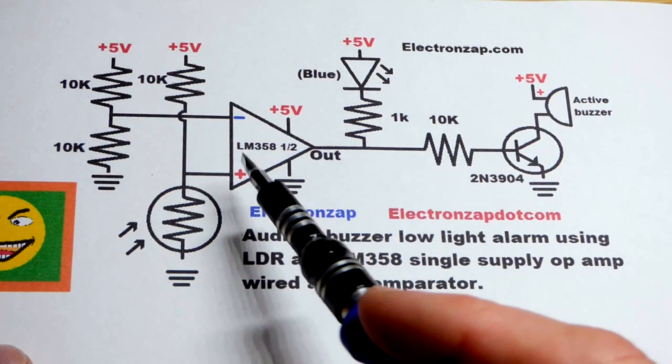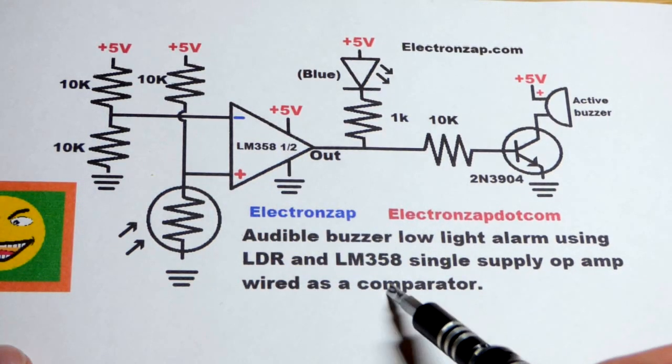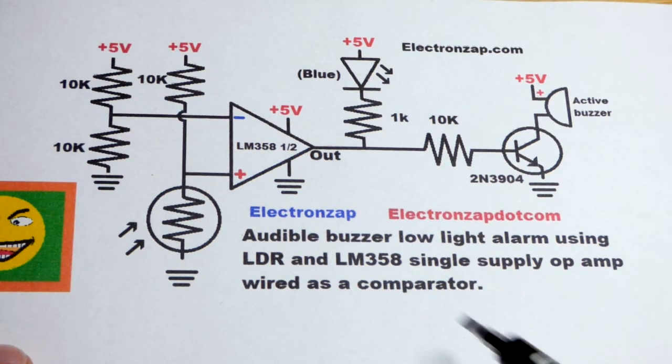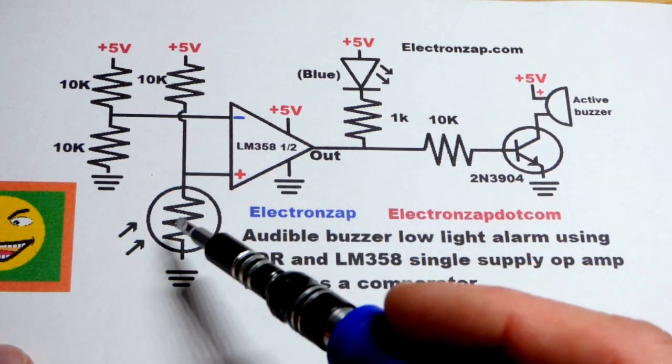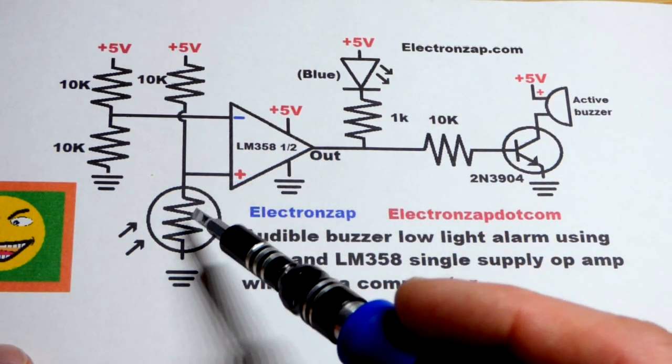So now in this video, we're going to use the LM358 again as a comparator circuit. We're just making some simple modifications, and we're going to make it respond to light level again.